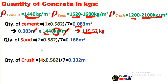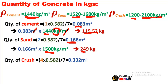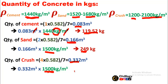If we know the density of sand being used, let's suppose it is 1500 kg per cubic meter, then multiplying the sand volume by this density gives 249 kg of sand required for this column. Similarly for coarse aggregate, assuming a density of 1500 kg per cubic meter, multiplying by the volume gives 498 kg. So: cement = 119.52 kg, sand = 249 kg, and coarse aggregate = 498 kg.